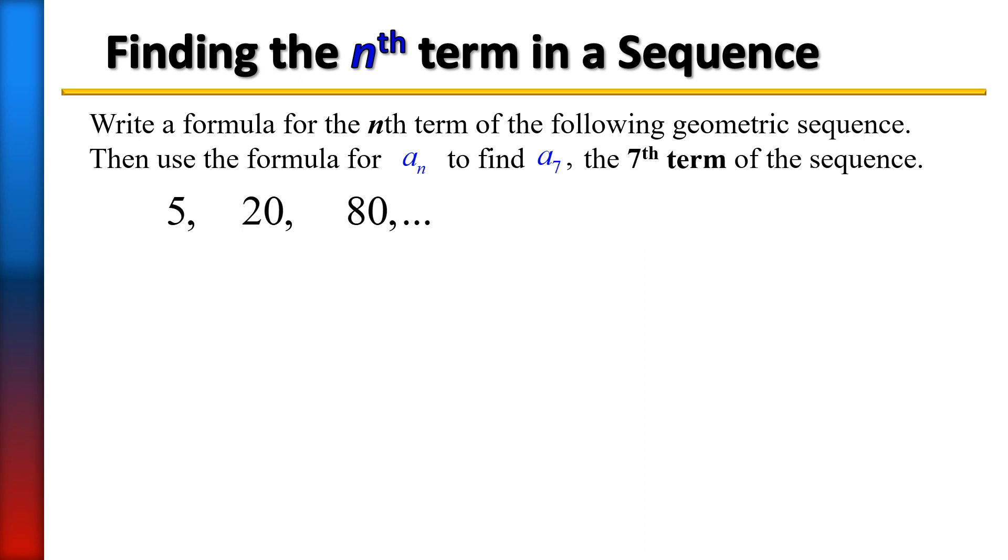That's correct, by 4. So 5 times 4 is 20. Let's see if that works with the next term. 20 times 4, does that give us 80? Yes, it does, so our common ratio is 4.